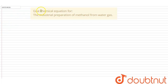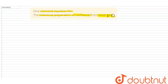The question is: give the chemical equation for the industrial preparation of methanol, that is CH₃OH, from water gas. We have to see how methyl alcohol or methanol is produced using water gas, and what are the advantages of it. Let us see what is the character of water gas.